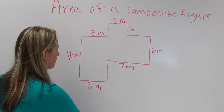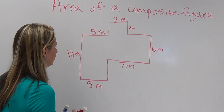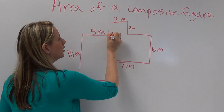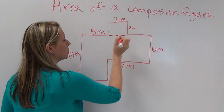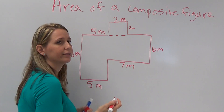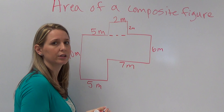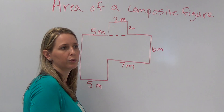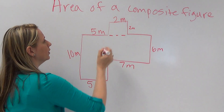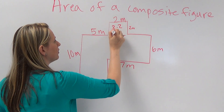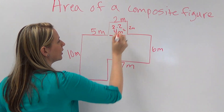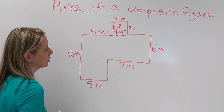For example, we can cut this little square off. The area of a square is either the side squared or length times width. So two times two is going to give you four meters squared for that little section.